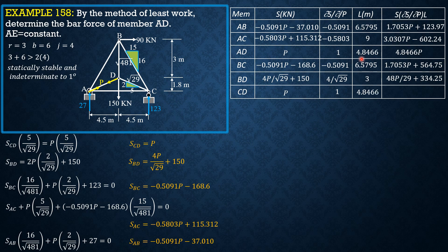Lastly, CD. It is P, so derivative 1, length is same as AD, 4.8466. So the product 4.8466P. So adding, summation of S partial of S with respect to P times length is equal to 17.79P plus 420.73.